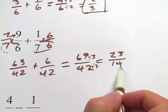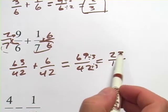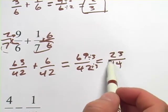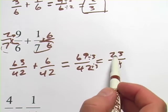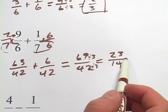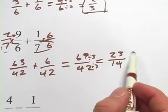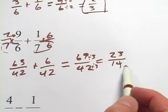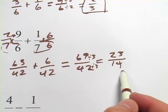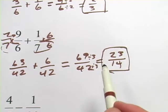And then to check whether I'm done, I have to ask myself, are there any factors in here that they have in common now, other than 1? And I don't think so, because 23 is what we call a prime number. It's only got itself and 1 as factors. So nothing in common with 14. So this looks like our simplest terms.